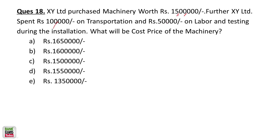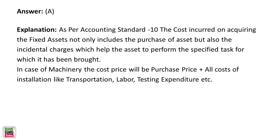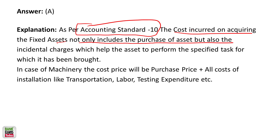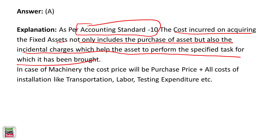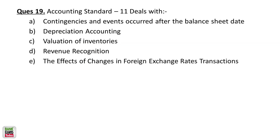XY Limited purchased machinery worth 15 lakhs, spent 1 lakh on transportation, and 50,000 on labor and testing during installation. As per Accounting Standard 10, the cost of acquiring a fixed asset includes not only the purchase price but also incidental charges that help the asset perform its specified task — carriage inwards and installation charges are all included. So the correct cost of machinery is 16 lakhs and 50,000.